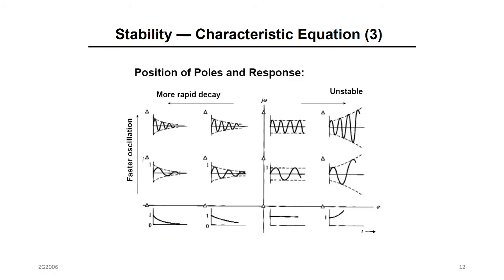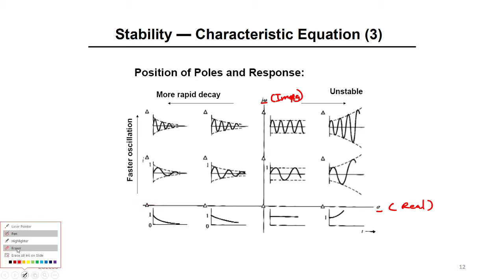This is the big picture. Here you see the j-omega axis — this is the imaginary part — and this is the real part. These points are the roots of the characteristic equation for different systems.